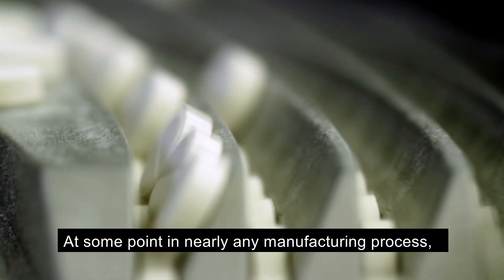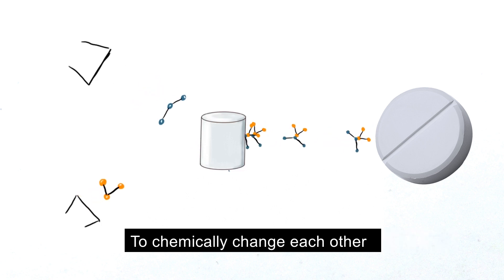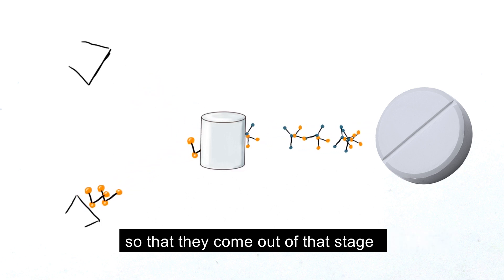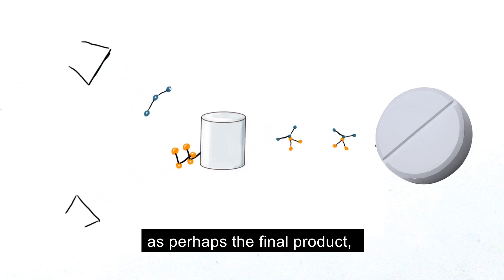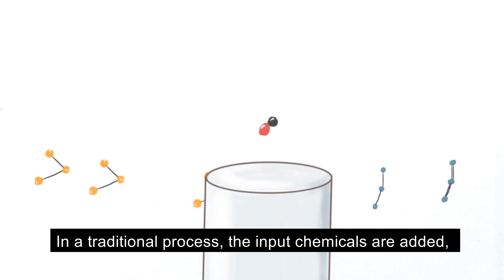At some point in nearly any manufacturing process, you need the input chemicals to react with each other, to chemically change each other so that they can come out of that stage as perhaps the final product, or as a material one step closer to the final product.